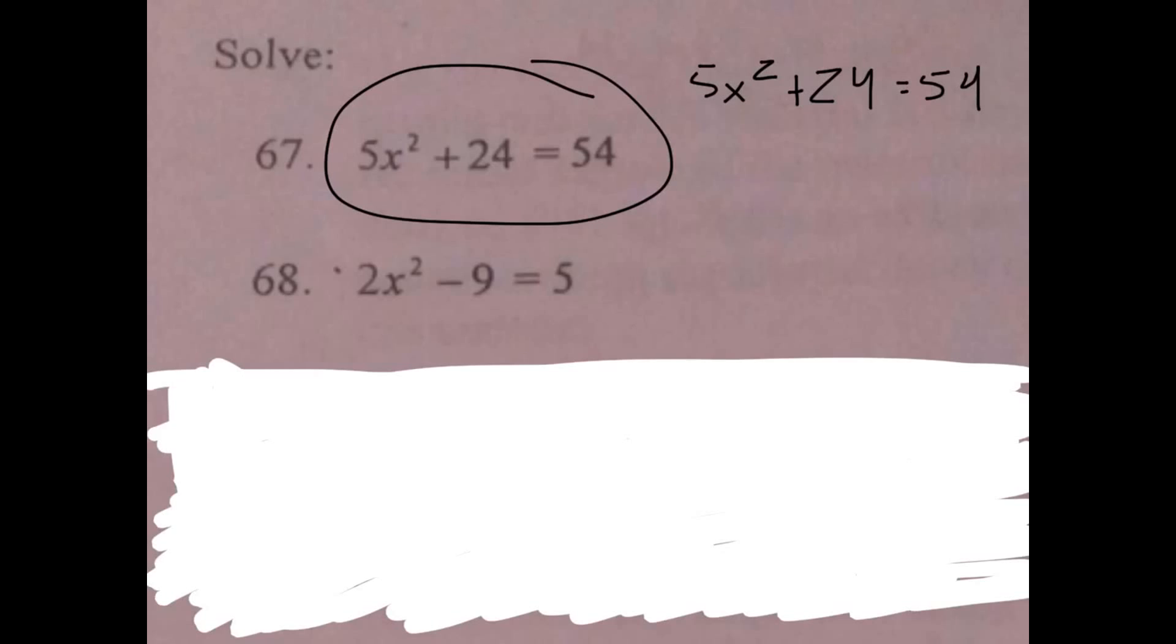I'm gonna go the easiest route and that's just getting x by itself. So we just get rid of the stuff furthest away from it on that side of the equal sign. That goes away, that equals 30.